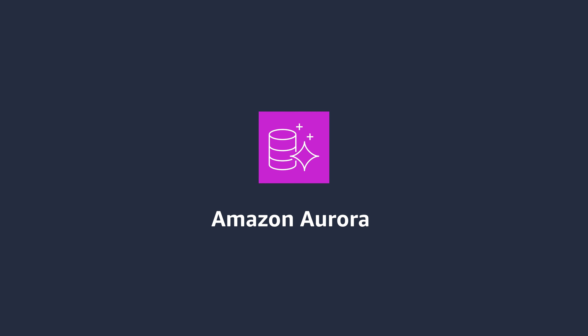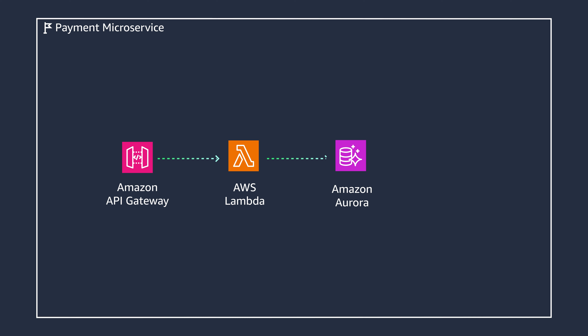Let's now take a look at the payments microservice leveraging Amazon Aurora. Aurora is a fully managed relational database engine that's compatible with MySQL and PostgreSQL and adheres to ACID properties. If data is accidentally deleted or corrupted, your customers will be unable to complete their orders or your website may be left in a dysfunctional state.